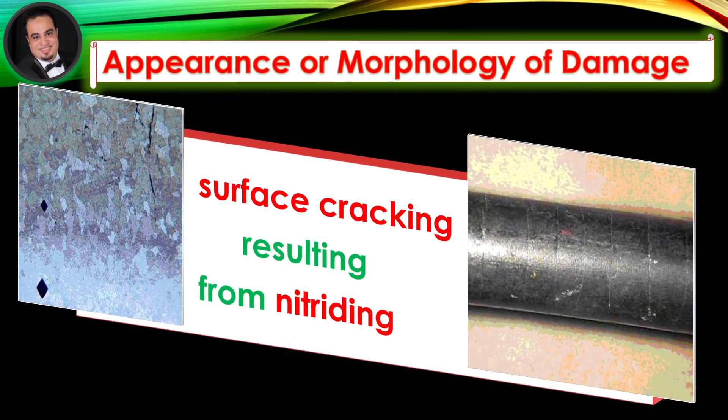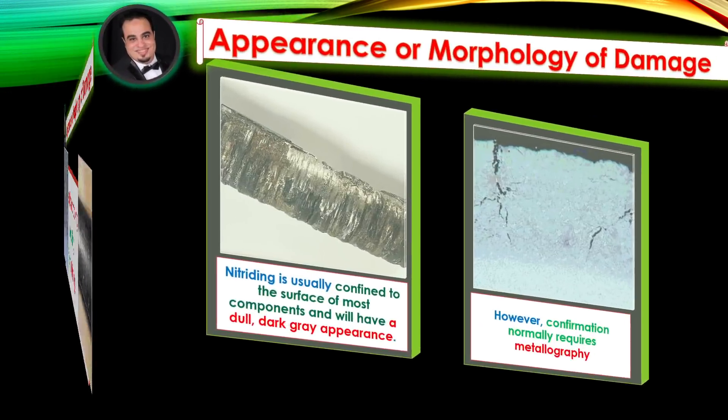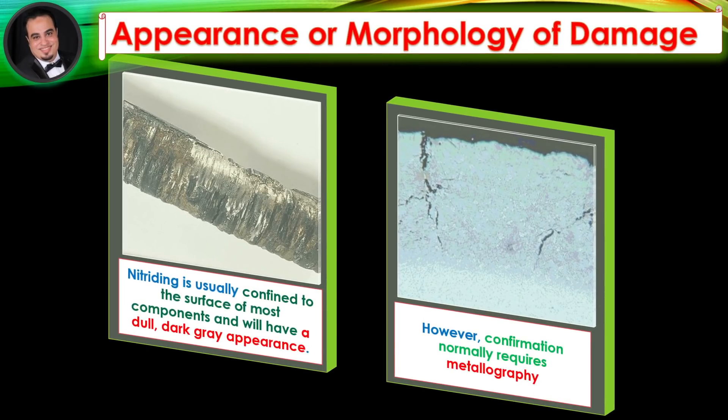Appearance or morphology of damage: An example of surface cracking resulting from nitriding is shown in figures. Nitriding is usually confined to the surface of most components and will have a dull, dark gray appearance. However, confirmation normally requires metallography.